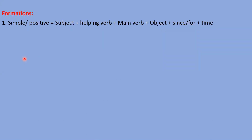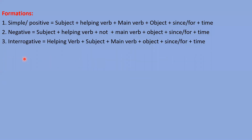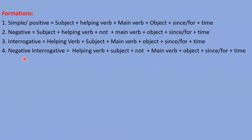For the formation: affirmative sentence — subject, helping verb, main verb, object, then since or for, then time. Negative sentence — subject, helping verb, not, main verb, object, since or for, time. Interrogative — helping verb comes before subject, then main verb, object, since or for, and time. Negative interrogative — helping verb first, then rest as usual. WH interrogative — WH word first, then helping verb, subject, main verb, object, and since or for.